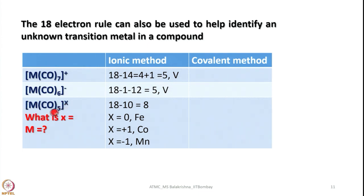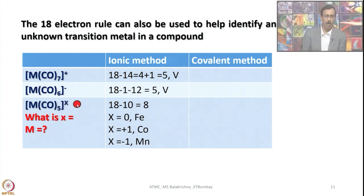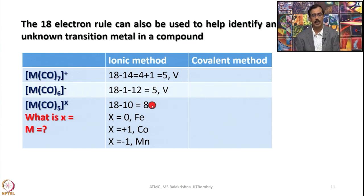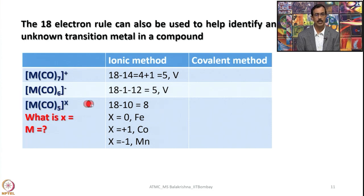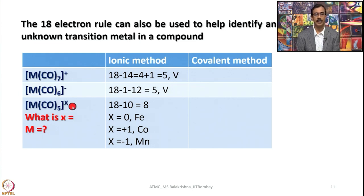If both the metal and the charge are unknown, there are multiple possibilities. For a pentacarbonyl complex: 18 minus 10 from five CO ligands gives 8 electrons. If neutral, it is Fe(0) like Fe(CO)5; if +1 it is cobalt; if -1 it is manganese. When both entities are unknown, arriving at an exact structure is difficult — at least one must be defined.